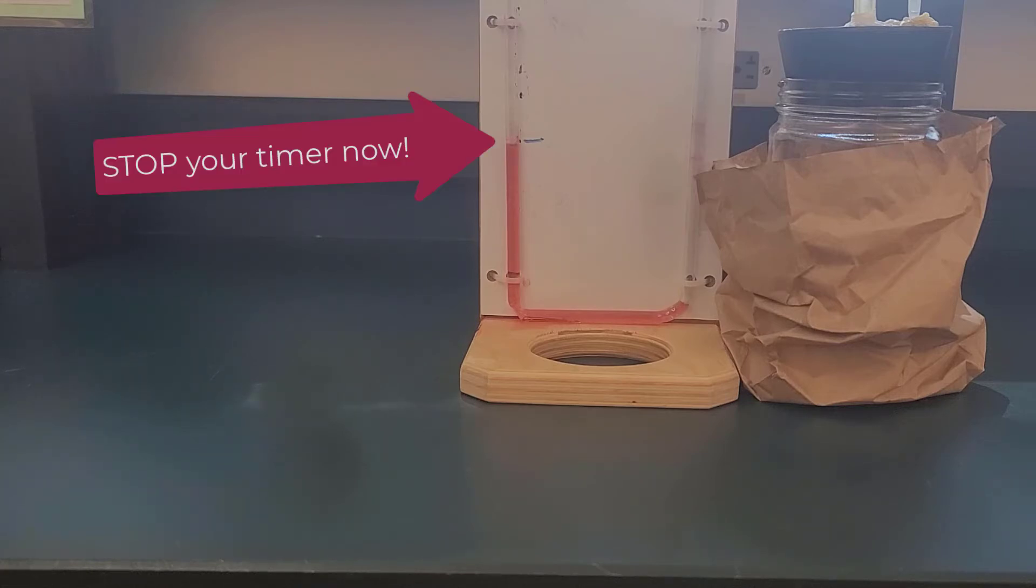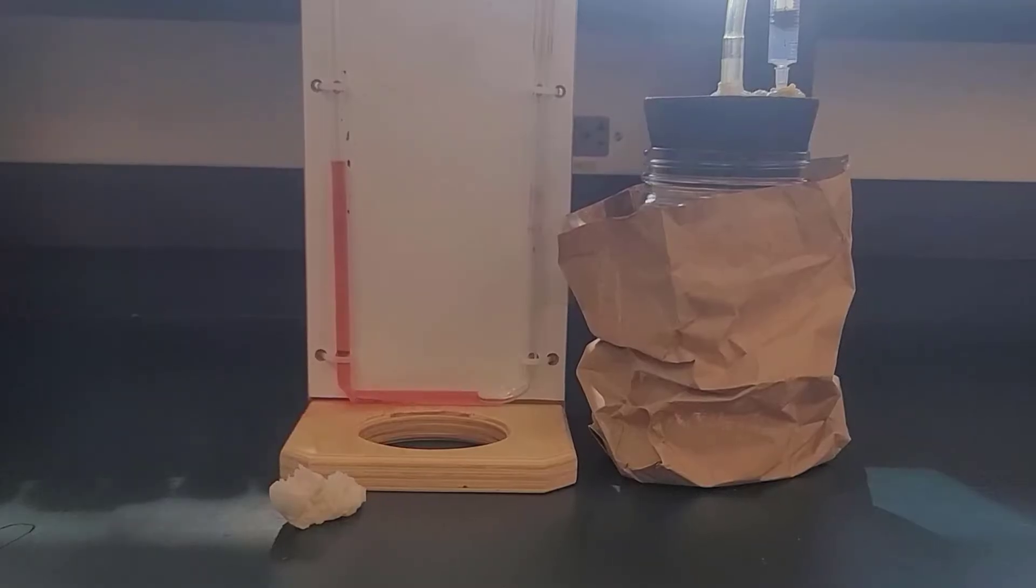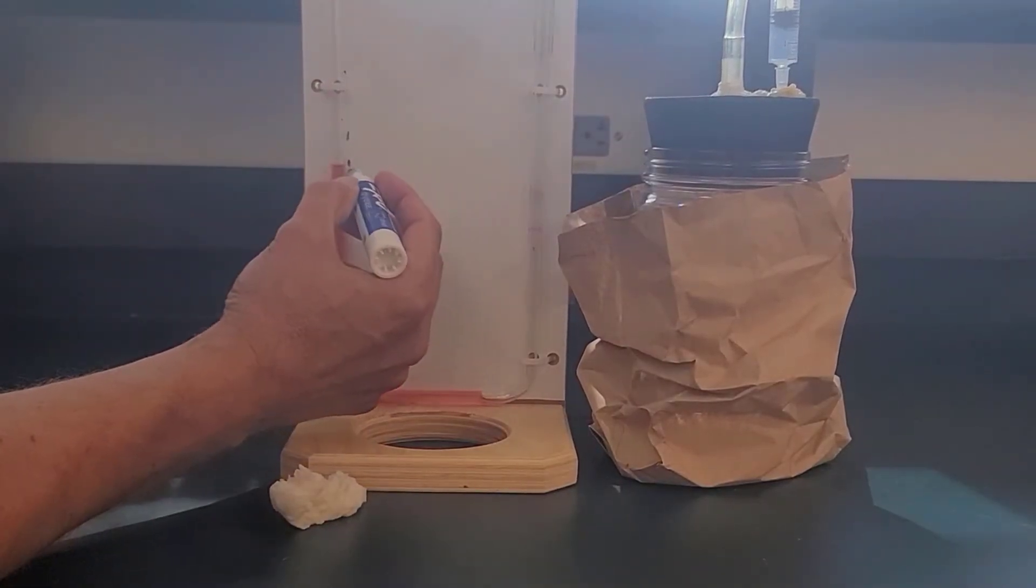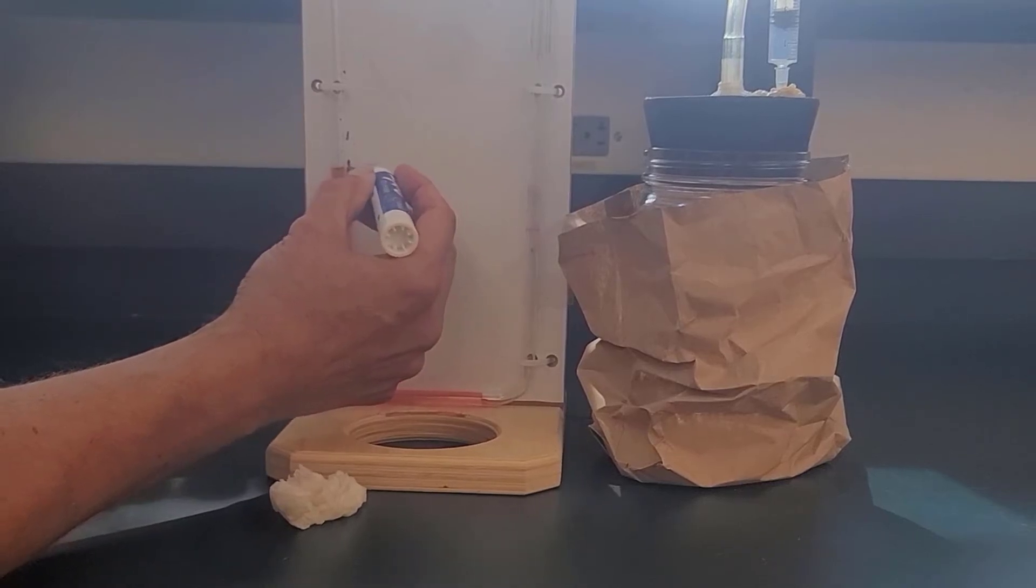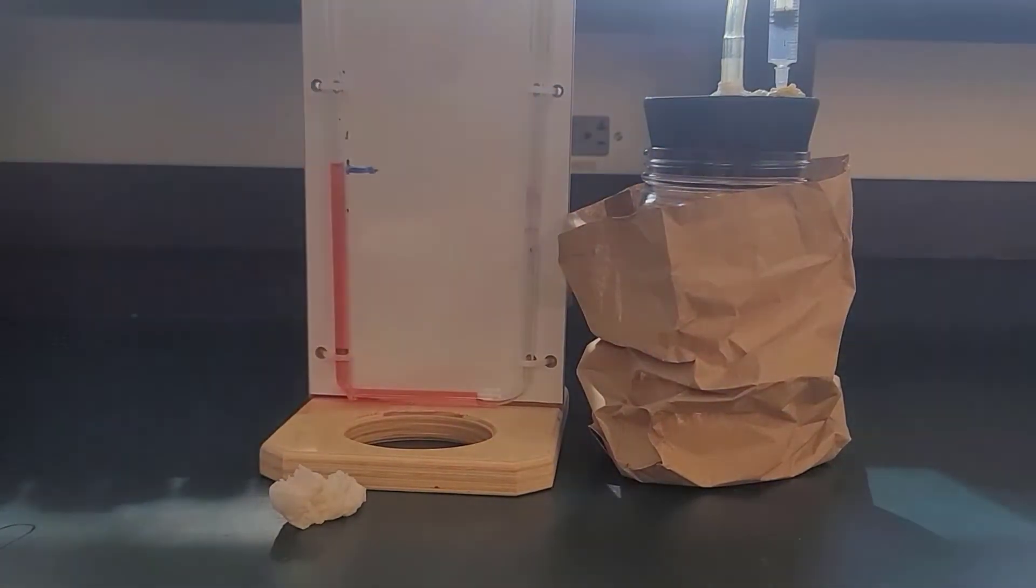And that should do it right about there. You can stop your timer. Once again, same thing with the last trial, we give the mouse a little break. Once again, third trial, we seal the jar, mark the line.